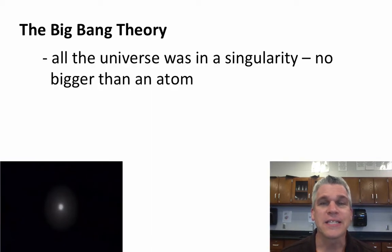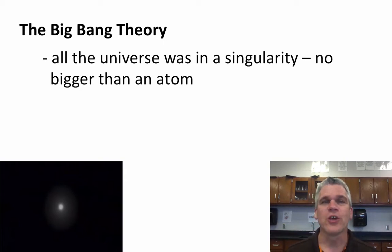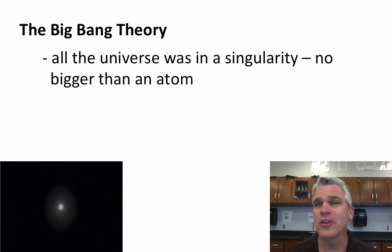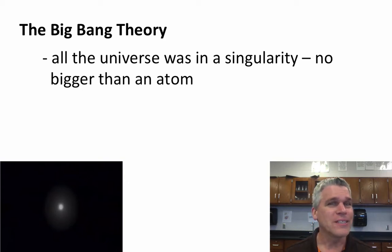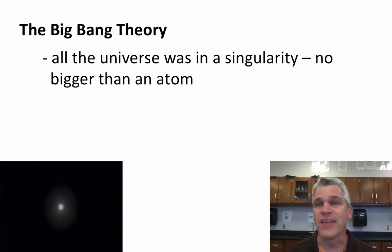The Big Bang Theory simply says that at one point, the universe was in what's called a singularity. In other words, all the matter in the universe was condensed down to a single point no bigger than the size of an atom. Now, for us, it really is very difficult to think about how something like that could happen, but we have to think that mass was not in the form then that it is now.